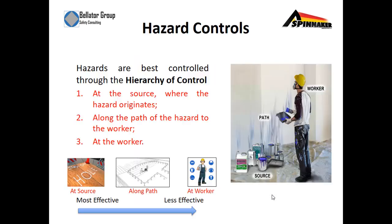Hazard controls. Hazards are best controlled through the hierarchy of control. This includes controlling hazards at the source where the hazard originates, along the path of the hazard towards other workers, or at the worker itself. It's important to know the best way to control hazards is at the source, and the least effective way is controlling hazards at the worker.